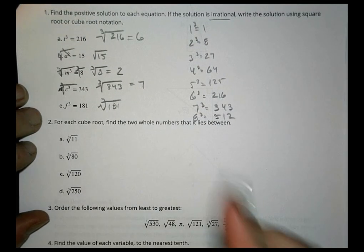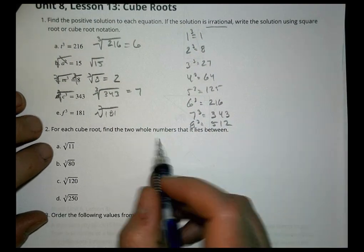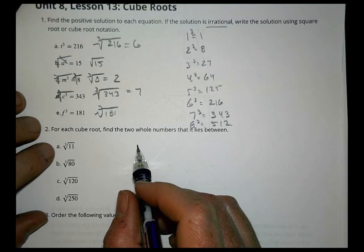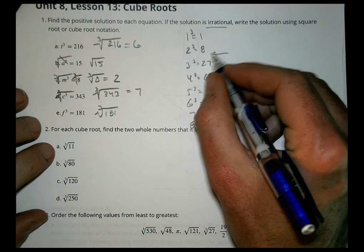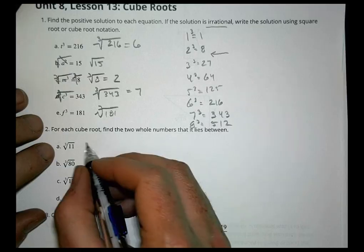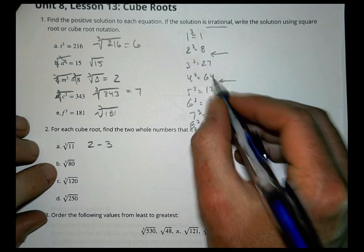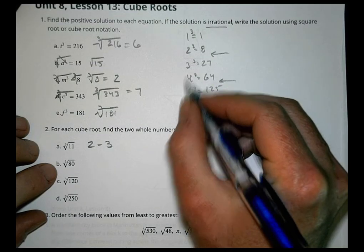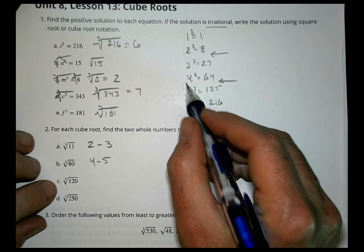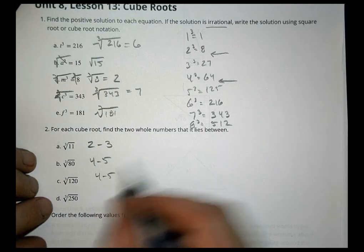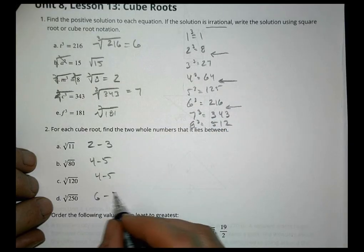For each cube root, find the two whole numbers it lies between. The cube root of 11: 11 is between 8 and 27, so it's between 2 and 3. The cube root of 80: 80 is between 64 and 125, so it's between 4 and 5. The cube root of 120 is also between 64 and 125, so between 4 and 5. And the cube root of 250 is between 216 and 343, so between 6 and 7.